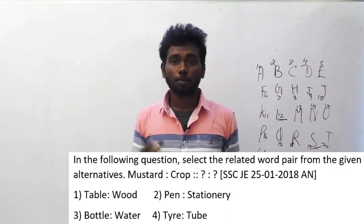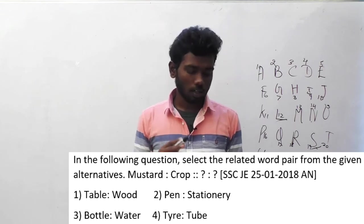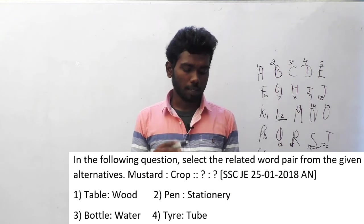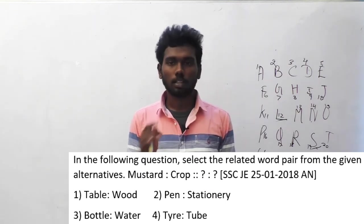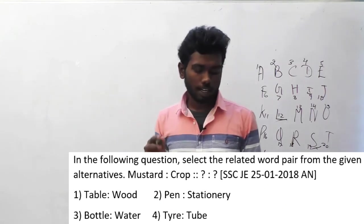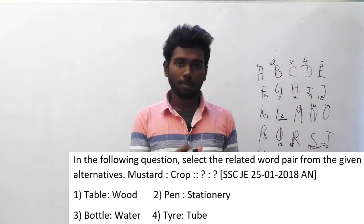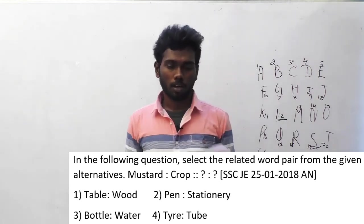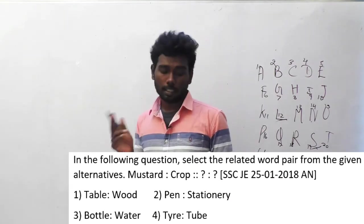Let us move on to question number 131. In the following question, select the related word pair from the given alternatives. Mustard is to crop implies dash. We have to initially understand the relation between mustard and crop. Mustard is a type of crop.